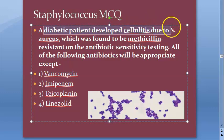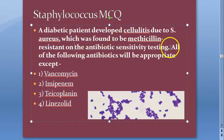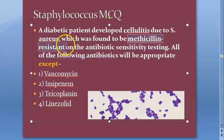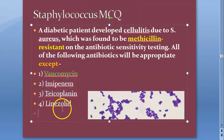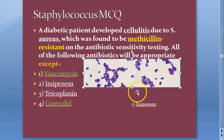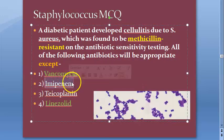A diabetic patient developed cellulitis due to methicillin-resistant staphylococcus aureus. All of the following antibiotics will be appropriate except. Vancomycin is appropriate. Linezolid is appropriate even for MRSA. The answer is imipenem — imipenem will not be effective against MRSA.